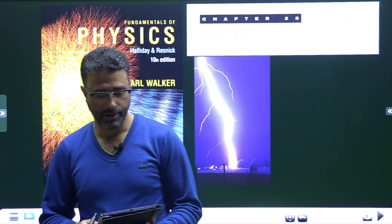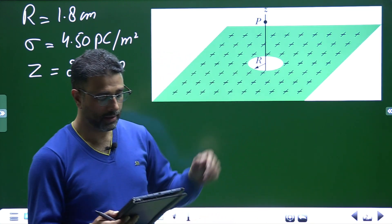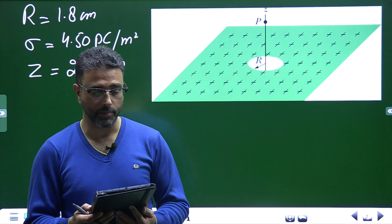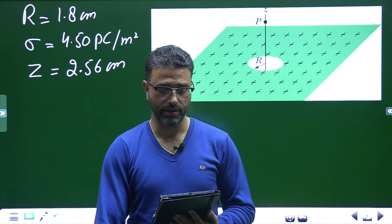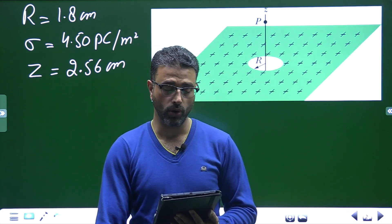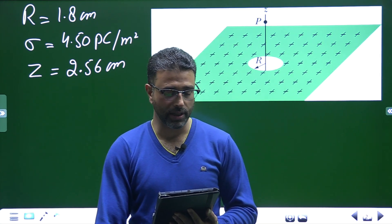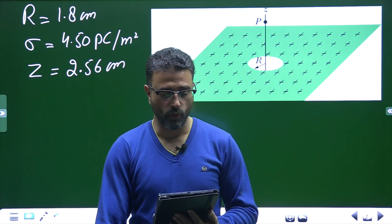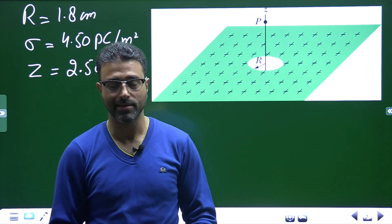Asalaamu alaikum warahmatullah. Problem number 34, chapter 23, Gauss law. In the figure, a small circular hole of radius 1.8 centimeters has been cut in the middle of an infinite flat non-conducting surface that has a uniform charge density sigma equal to 4.50 picocoulombs per meter squared. The Z-axis with its origin at the hole center is perpendicular to the surface. In unit vector notation, what is the electric field at point P at Z equal to 2.56 centimeters?